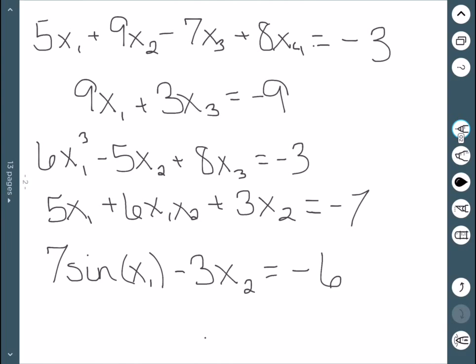My second one, 9x1 plus 3x3 equal to negative 9. This is a linear equation in three variables. Even though we only see two of them, we have a plus 0x2 term in there.